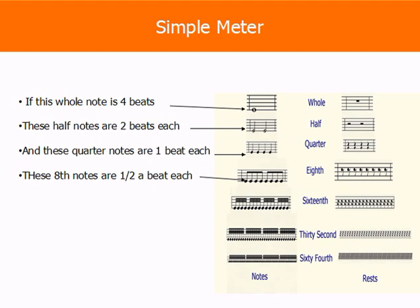So just to review again, if the whole note is four beats, let's say we assign it to be four beats, the half notes are two beats, the quarter notes are one beat, the eighth notes are half a beat each, the sixteenths would be one-fourth of a beat each. So four sixteenth notes equal one beat.